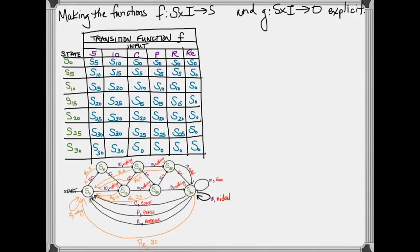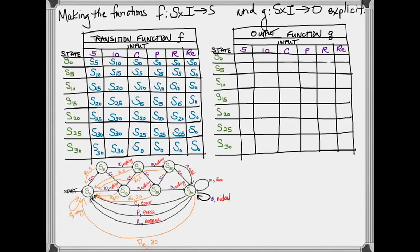So that is our transition function completely written out. What is our output function? Well, the output function has exactly the same state input pairs, but now we want to look at what the outputs are.